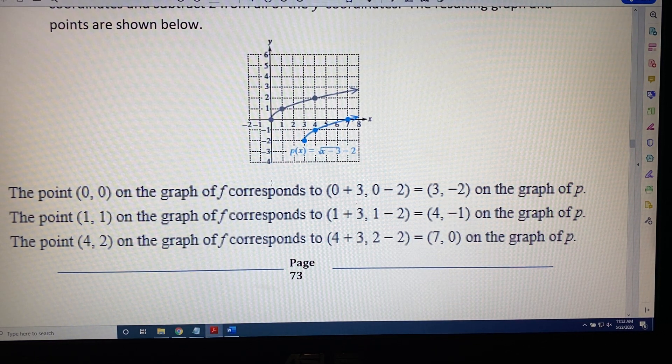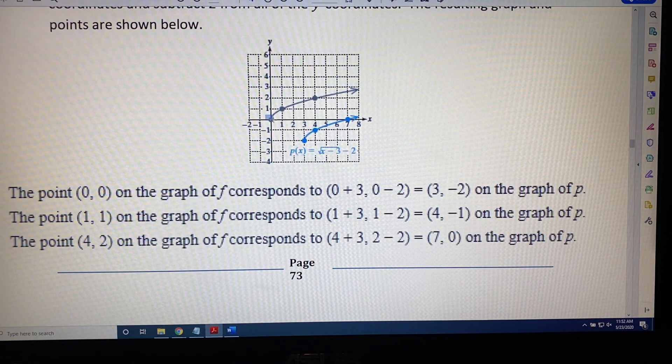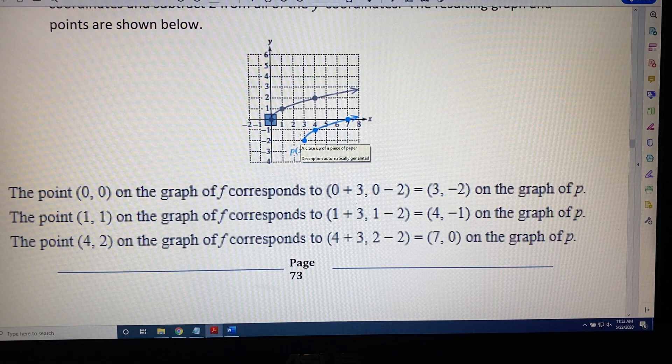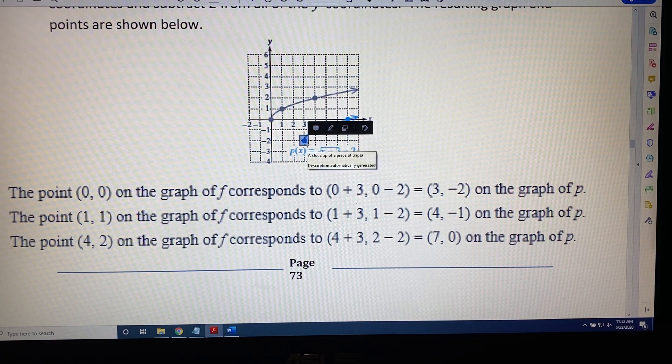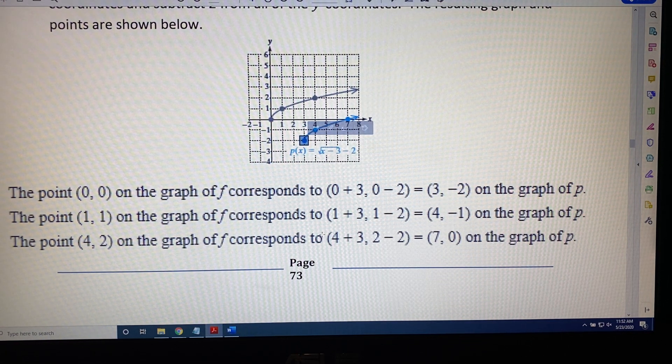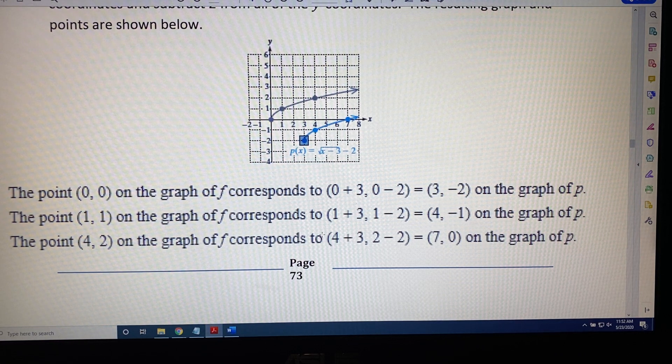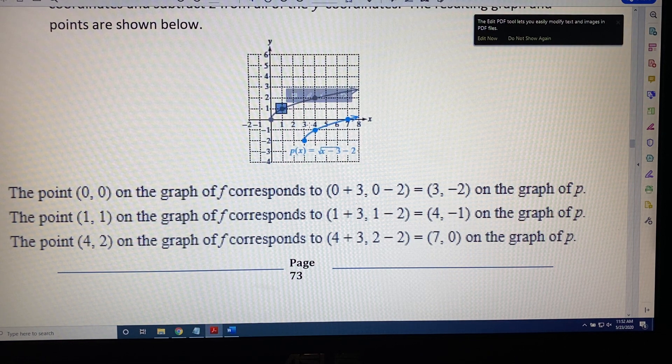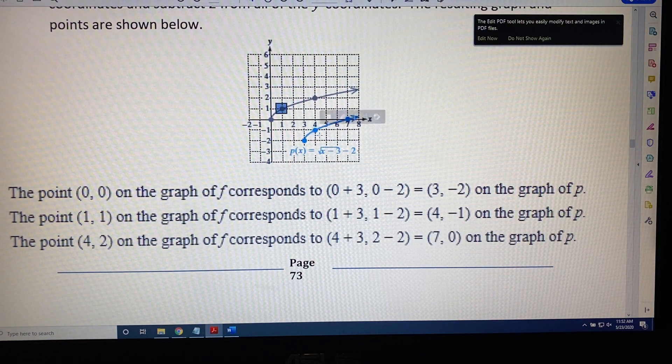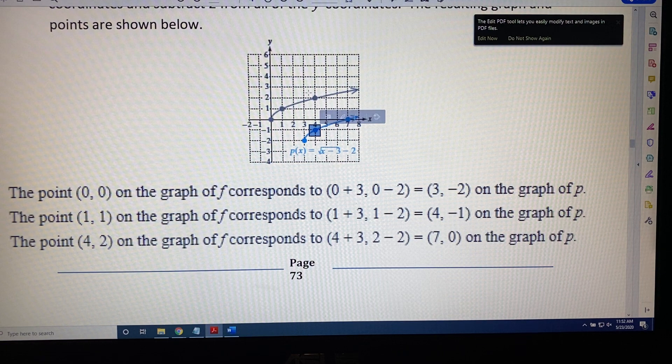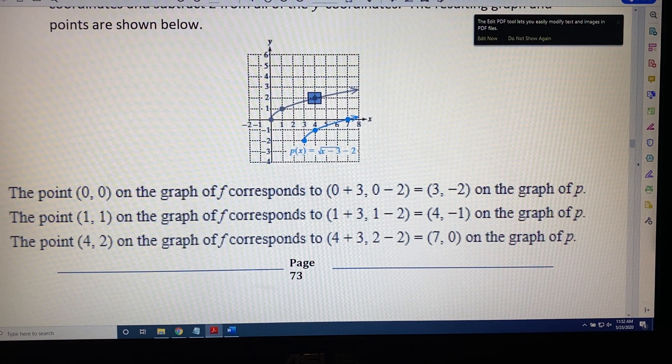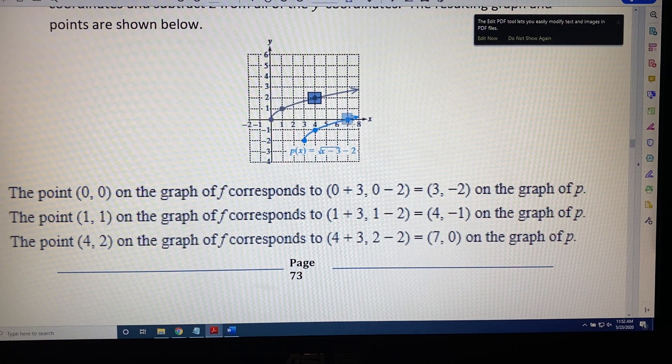So we now have a correspondence. The point (0, 0) will turn into the point (3, -2), because we are adding three to the x's and subtracting two from the y's. The point from the parent function (1, 1) will turn into the new point (4, -1), and the point from the parent function (4, 2) will turn into the point (7, 0).